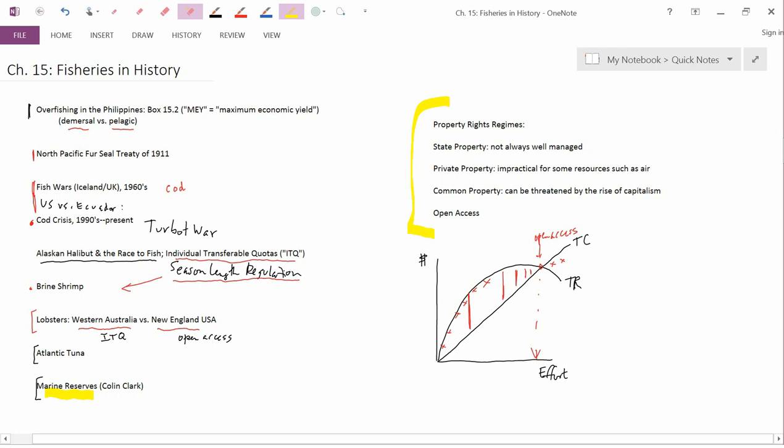Our final topic in Fisheries Economics, Chapter 15, is going to be Property Rights Regimes. This is related to Box 15.3 in your textbook.